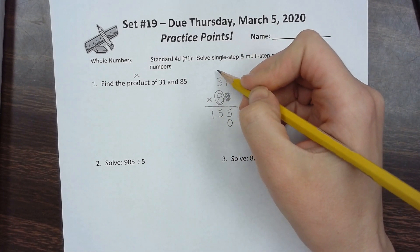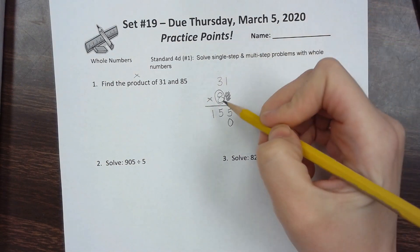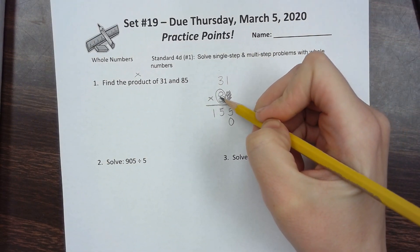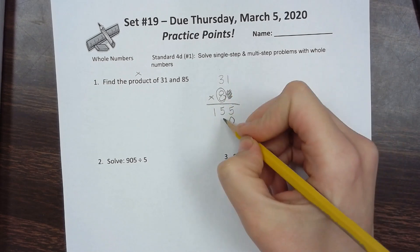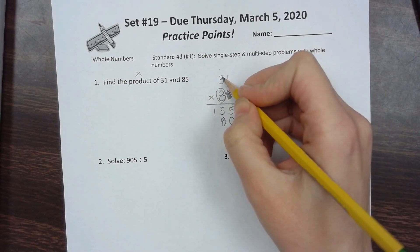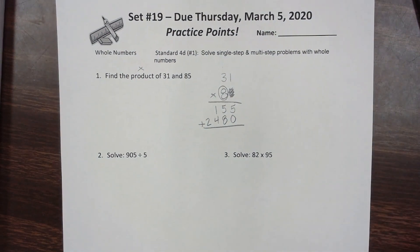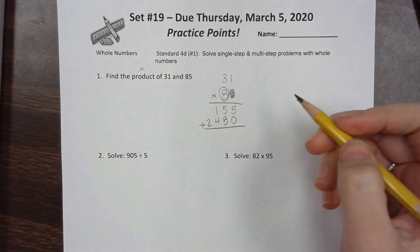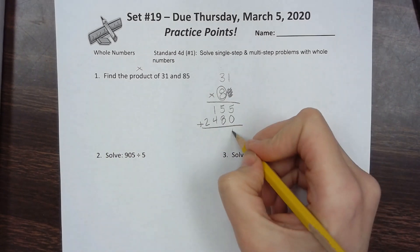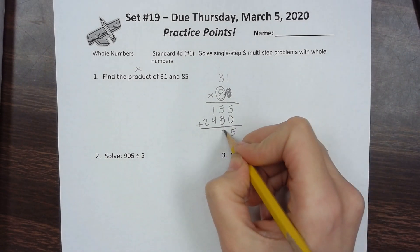Now we use the tens digit: 8 times 1 is 8, 8 times 3 is 24. Our last step is to add those two parts together to get our final product. 5 plus 0 is 5, 5 plus 8 is 13, carry the 1.